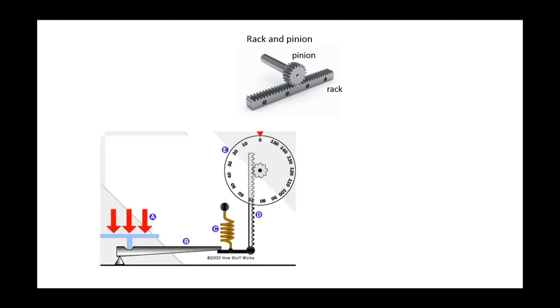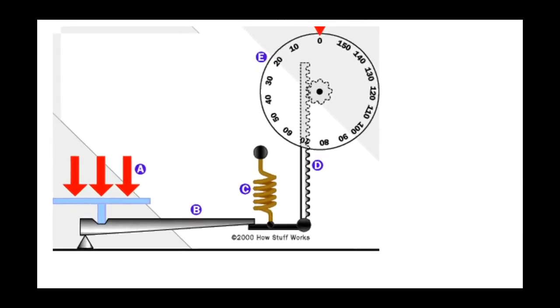Now, for example, here's a scale. A is the load to be weighed. It pushes down so that the lever B in conjunction with the spring C causes the rack D to move, and this makes the pinion rotate. The pinion is attached to the dial, so the dial will rotate to show the weight.